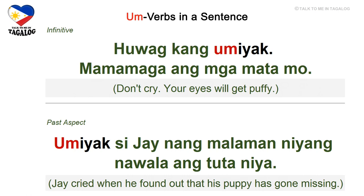Infinitive: huwag kang umiyak, mamamaga ang mga mata mo. Huwag means don't, umiyak means to cry, mamamaga is will get swollen or puffy, and mga mata is eyes — don't cry, your eyes will get puffy.